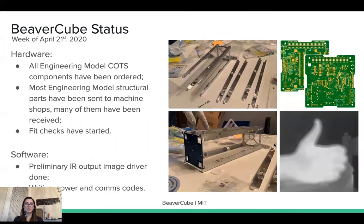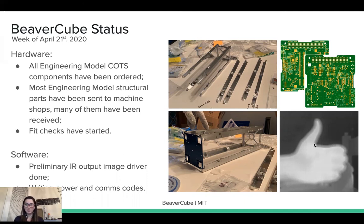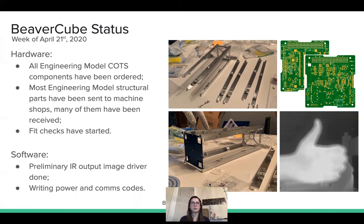As of the week of April 21st, all engineering model COTS components have been ordered. Most engineering model structural parts have been sent to machine shops, many have arrived, and fit checks have started. The images show the rails and top cap from the satellite with mounts being fit-checked for the first time, an infrared image from one of our cameras, and two boards being developed for the computer. On the software side, a preliminary infrared output image driver is done, and we are currently writing the power and communications code.